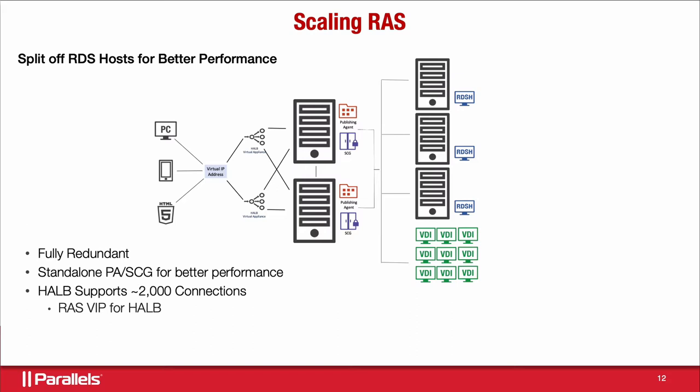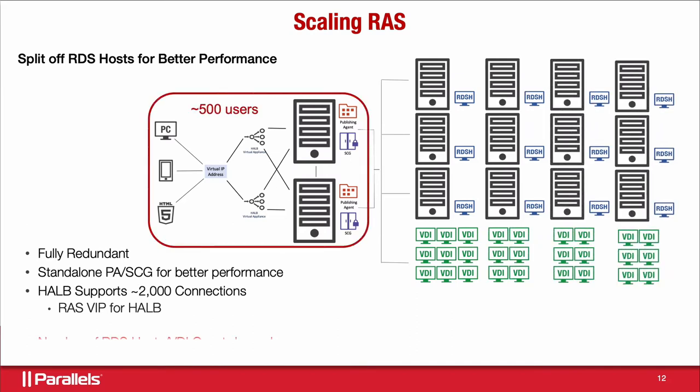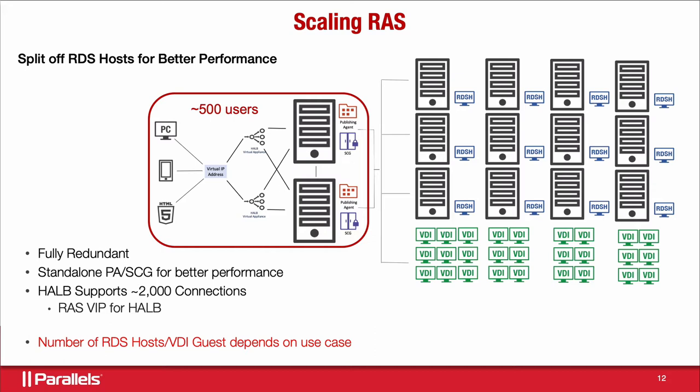Once scaled out, the management components — two virtual appliance load balancers and two management servers — support about 500 concurrent users. The management servers don't need to be beefy: two virtual CPUs and four to eight gigs of memory is sufficient. For the remote desktop servers or VDI instances on the right, you'll need as many as your applications, usage, and workload require — that's a different calculation entirely.